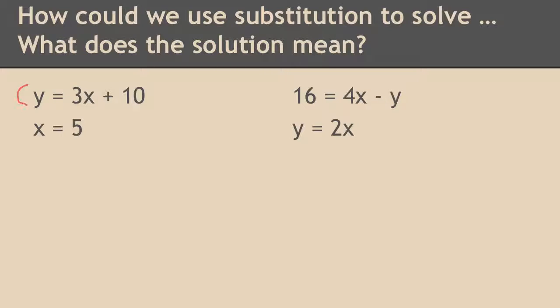So here I have my first system, and I already know what x equals, which is nice because I can start my ordered pair. I know x is 5. So then I can simply substitute right here and solve for y.